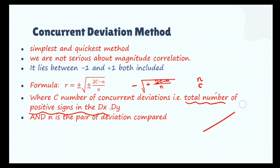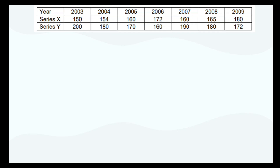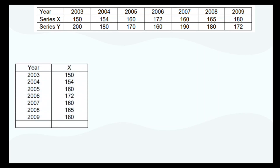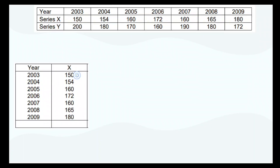Let's understand this by an example. Suppose I consider years from 2003 to 2009, with a series of X values and Y values. First, I look at the values of X. What we have to check is just the concurrence — whether both variables have the same kind of deviation. So I compute deviation for X individually. Deviation means whether it is increasing or decreasing. For the first value in 2003, we cannot compare to a previous year, so I cannot say anything for the first year. For 2004, I can see it increased, so I write a plus sign.